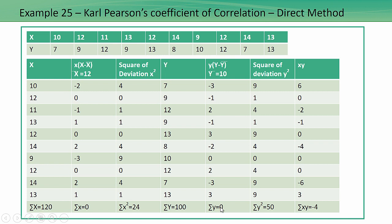Y minus Y-bar: for example, 7 minus 10 is minus 3, and so on. The summation of small y equals 0. The square of deviation would be: 3 squared is 9, minus 1 squared is 1, 2 squared is 4, and so on. So summation of y squared would be 15. Then I find out xy: minus 2 multiplied by minus 3 gives 6, 0 multiplied by minus 1 is 0, minus 1 multiplied by 2 is minus 2, and so on. Summation of xy equals minus 4.